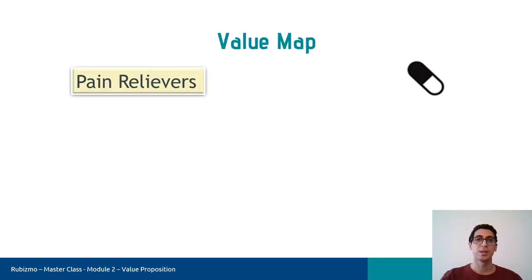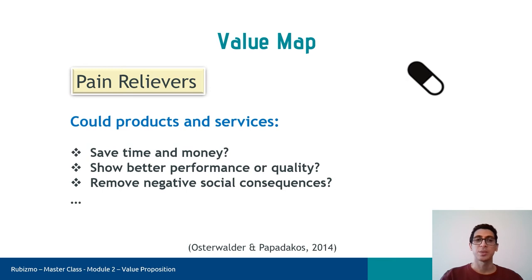Pain relievers is the next block. Here we need to know how our products or services alleviate specific customer pains. In other words, we need to reduce something that prevents customers from getting a job done. For example, could products and services save time and money, show better performance or quality, remove negative social consequences, and so on? Let me add that great value propositions focus on the pains that matter to customers. Therefore, we don't need to address all the pains that we have identified. Instead, we should solve the pains that have extreme effects.